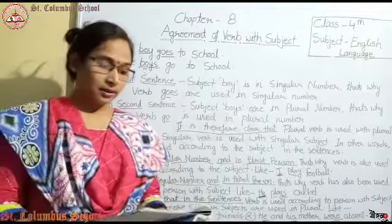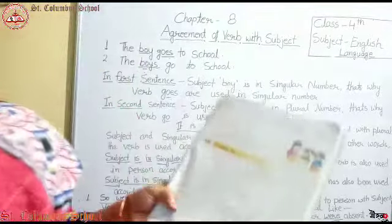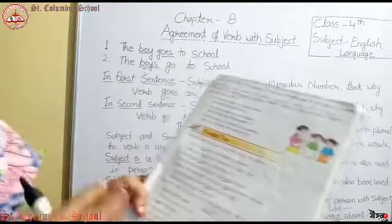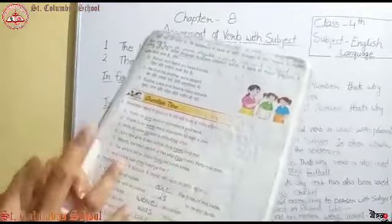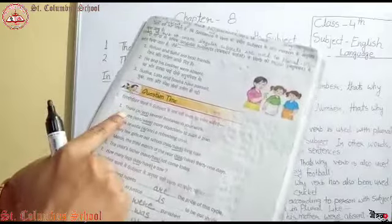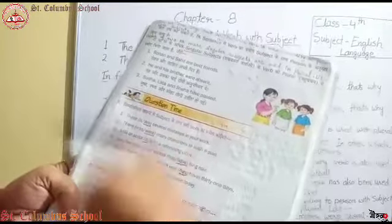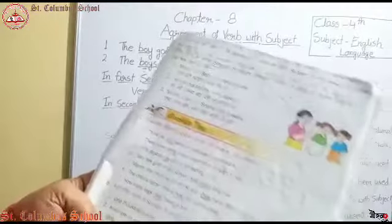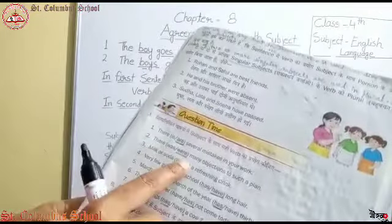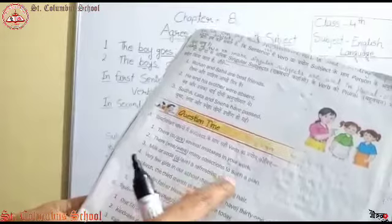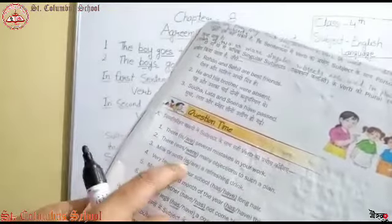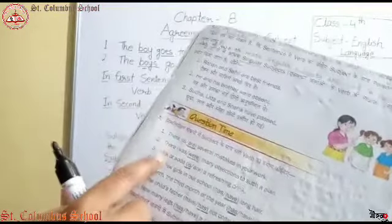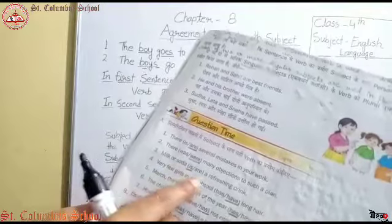आपको exercises बता रही हूँ। निम्नलिखित वाक्यों में subject के साथ सही verb का प्रयोग कीजिए। 'There are several mistakes in your work' - there के साथ are use हुआ। 'There were many objections to such a plan.' Milk or soda - यहाँ or है, and नहीं, तो एक ही word है। So 'Milk or soda is a refreshing drink।'